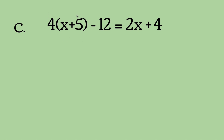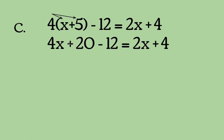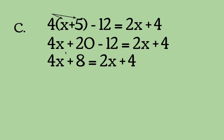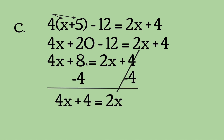Our last equation is 4 times (x plus 5) minus 12 equals 2x plus 4. What we're going to do is distribute the 4 to x and 5. 4 times x equals 4x, and 4 times 5 equals 20, leaving us with 4x plus 20. Then we simplify 20 minus 12, which equals 8. So our equation is now 4x plus 8 equals 2x plus 4.